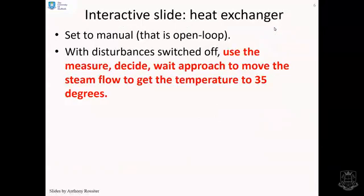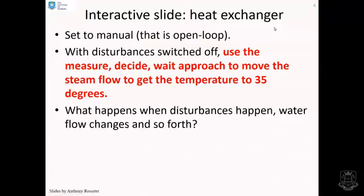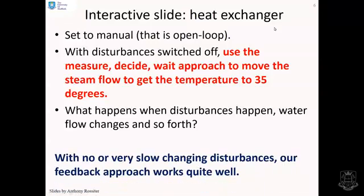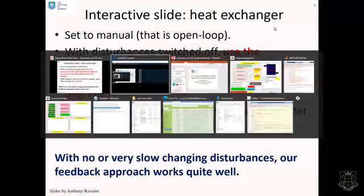Let's try something on a very similar system, an industrial heat exchanger, where the idea is to get the temperature correct. We also want to look at what happens when disturbances happen, when flow rates change and so forth. What you will see is that with no or very slow changing disturbances, the human approach to feedback works very well.